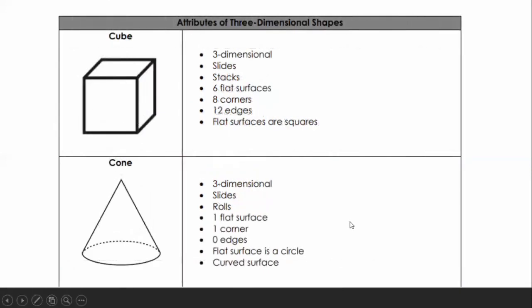For three-dimensional shapes: a cube has six flat surfaces, eight corners, and twelve edges, and its flat surfaces are squares. A cone rolls, has one flat surface at the bottom, one corner at the top, zero edges, and a curved surface — its flat surface is a circle.